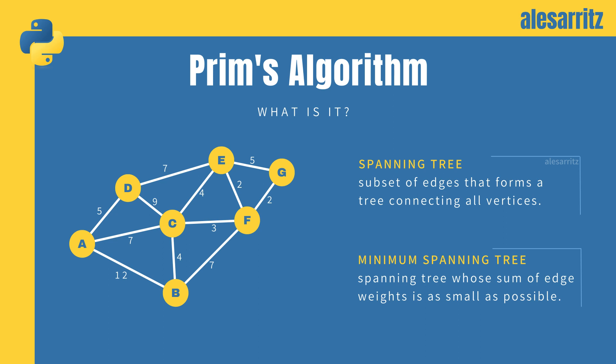Let's see how Prim's algorithm works. It calculates the minimum spanning tree in a connected and weighted graph, starting from a selected vertex.